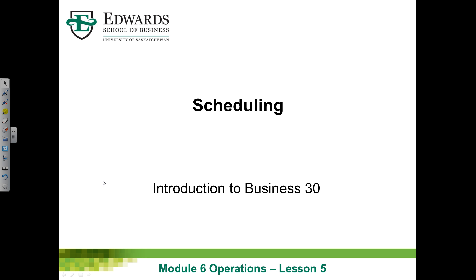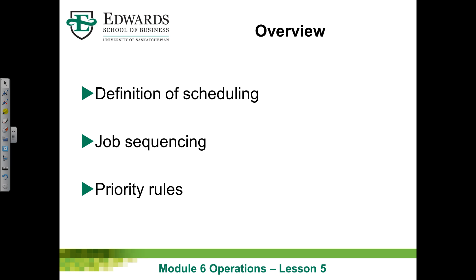Hello again everybody. Welcome back to Introduction to Business 30. This is the Achieving World Class Operations module, Lesson 5. We're going to look at the topic of scheduling. The overview involves three main topics: first, we'll explore a definition of scheduling; second, we'll examine the issue of job sequencing; and third, we'll look at priority rules — different rules we can follow to sequence jobs on our to-do list. This is a topic of real importance to operations management.